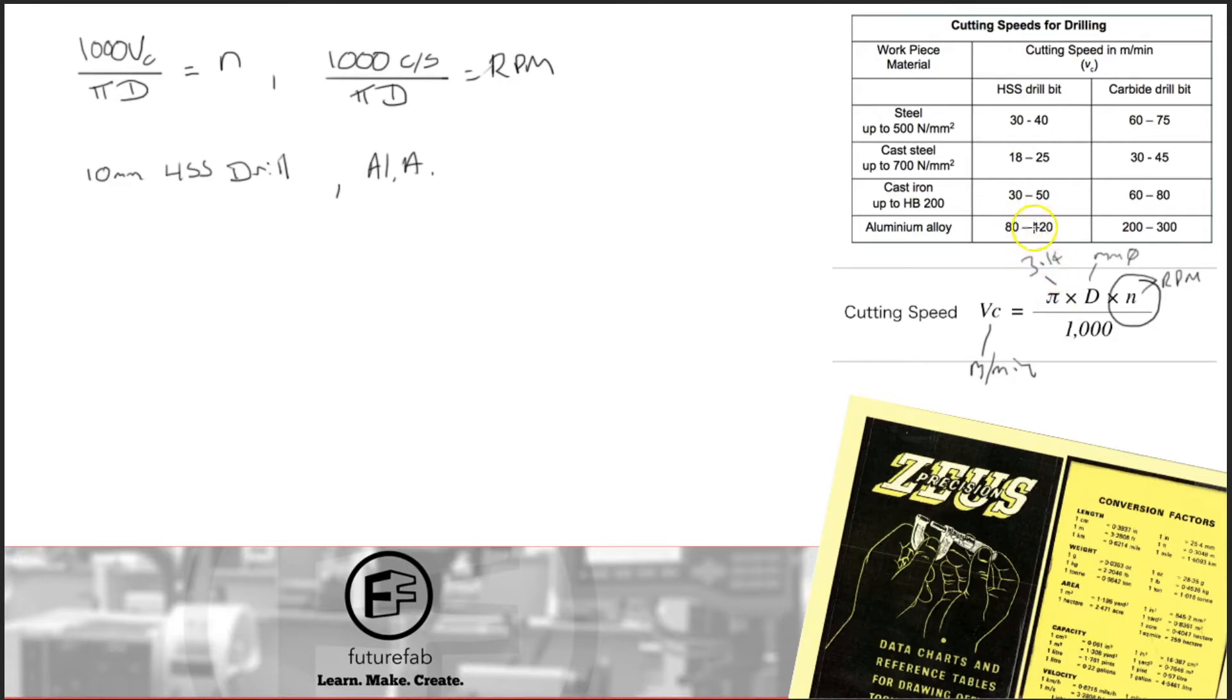And we're going to look up here. Now we've got 80 to 100. Now, if in doubt, use a middle value. So in this case, I'm just going to pick something approximately in the middle. Well, exactly in the middle, I suppose, which is 100. So it would be 1000 times 100 divided by Pi D.